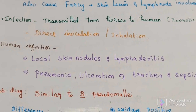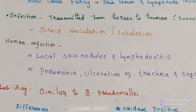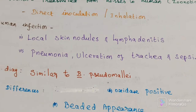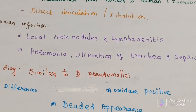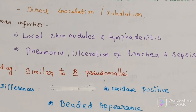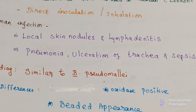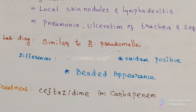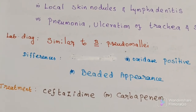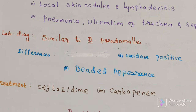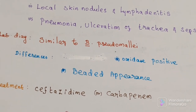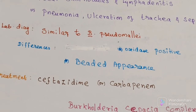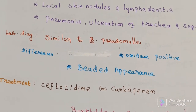Laboratory diagnosis for Burkholderia mallei is similar to Burkholderia pseudomallei with one difference: while B. pseudomallei shows a safety pin appearance on direct microscopy, B. mallei shows a beaded appearance. Treatment is also similar, with drugs of choice being ceftazidime and carbapenem.